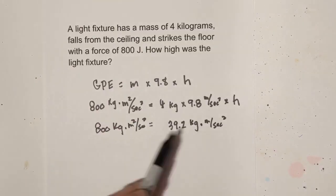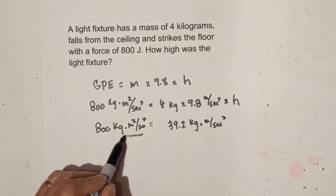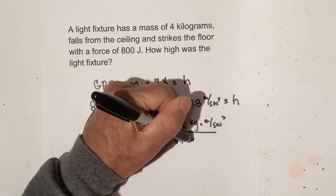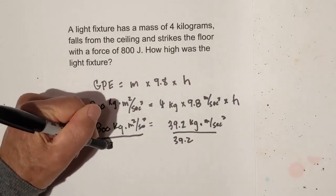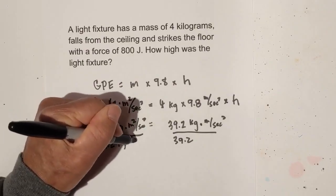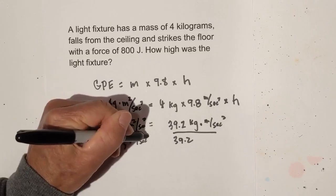Now all we do is divide. I'm going to divide each side by 39.2. So divide this by 39.2. Let me bring the units over. We have kilograms, we have meters per second squared.